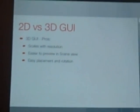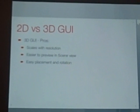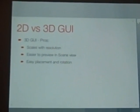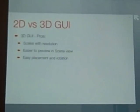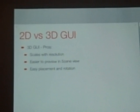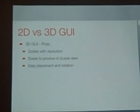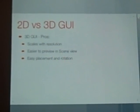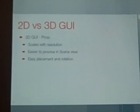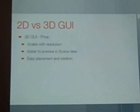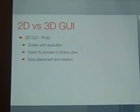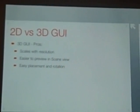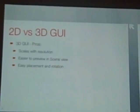Another advantage of using 3D GUIs is that it's very easy to preview them in your scene view. With GUI elements, which is the old method of creating GUIs in Unity, you can see them in your game view if you have your scene view showing at the same time as the game view. But the problem is if you have multiple screens, you have to make sure all the other ones are disabled before you can preview the screen you're working on, which gets a little tedious.